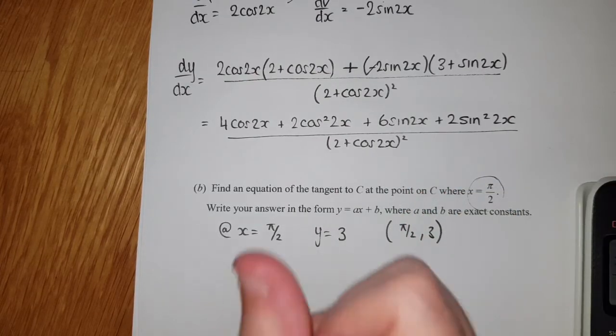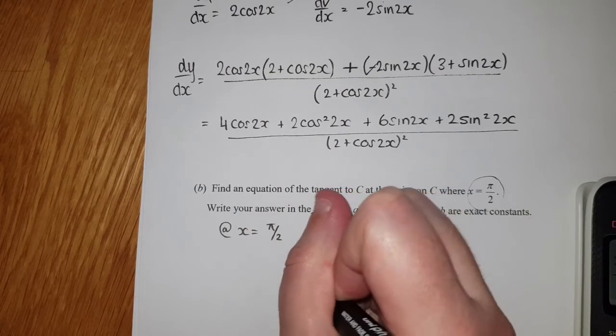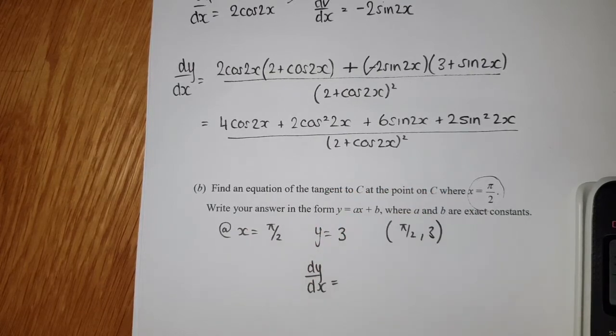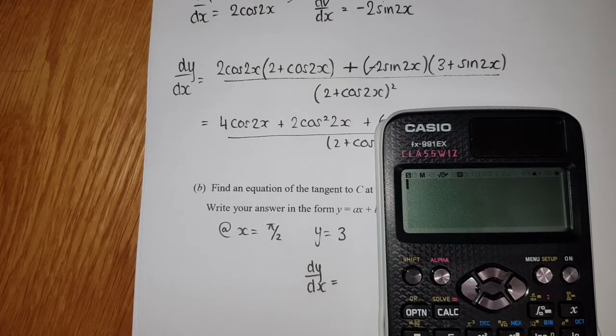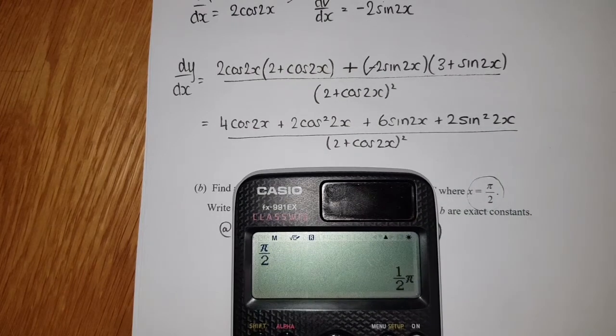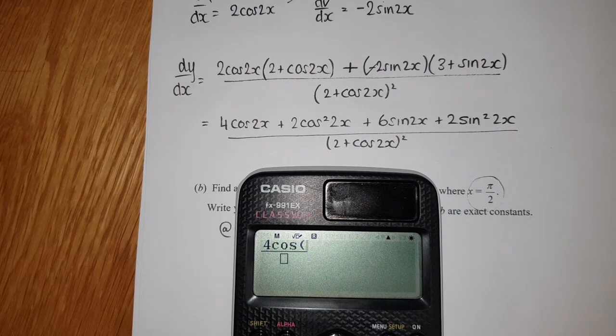And then the second bit is we need dy/dx. Now it is a horrendous thing to type in, so it's possibly easier if you do π/2 in your calculator first of all, and then we'll go through as much as we can.